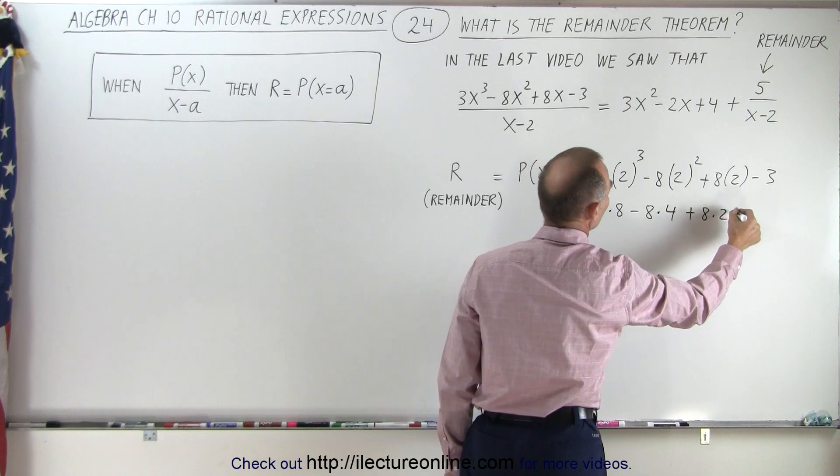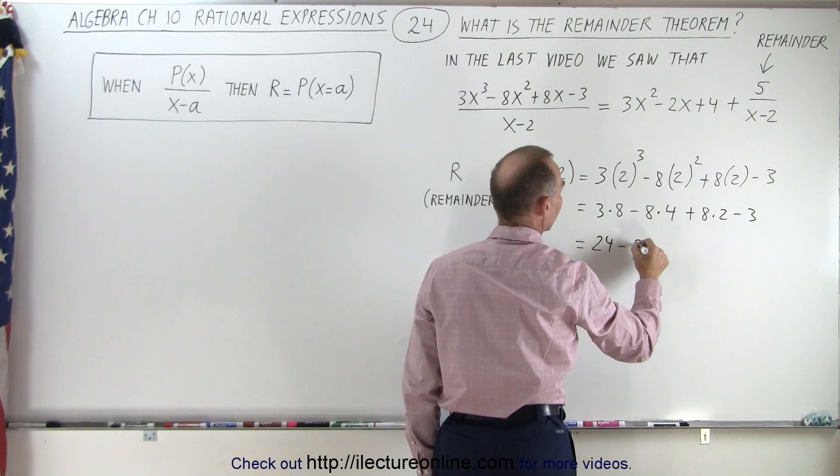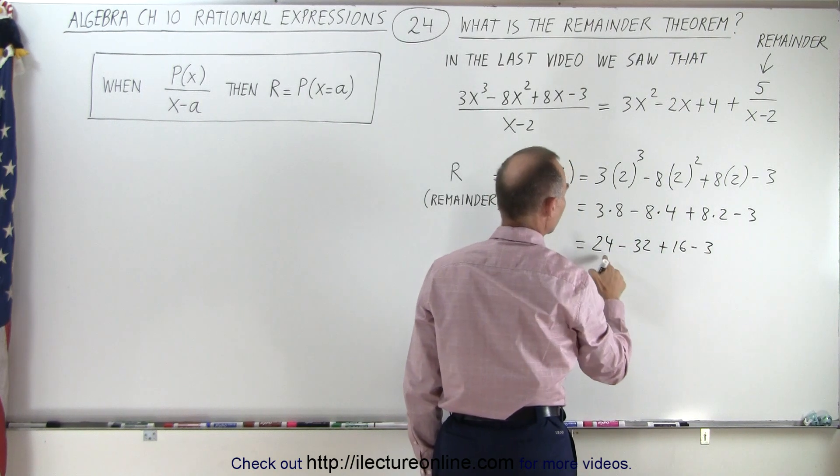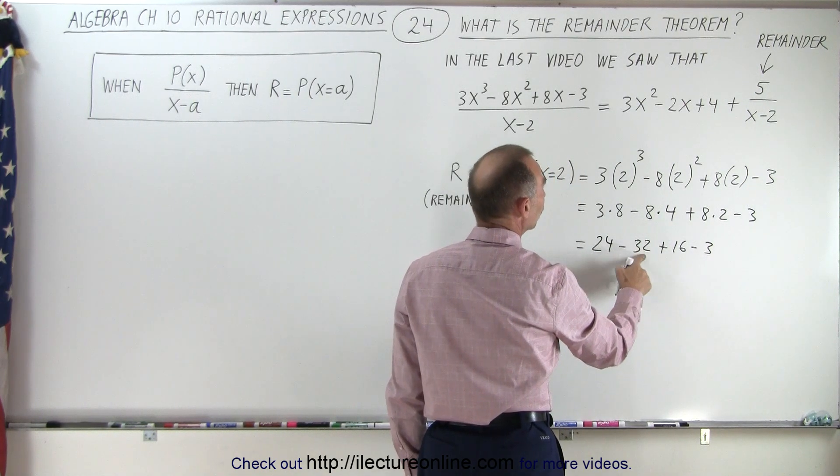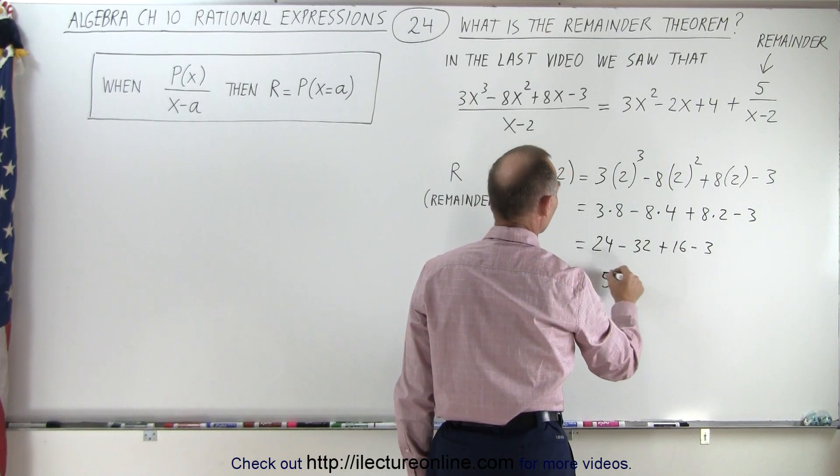So this is equal to 24 minus 32, plus 16 minus 3. We have 24 plus 16, which is 40, minus 32, which is 8, 8 minus 3, which is equal to 5.